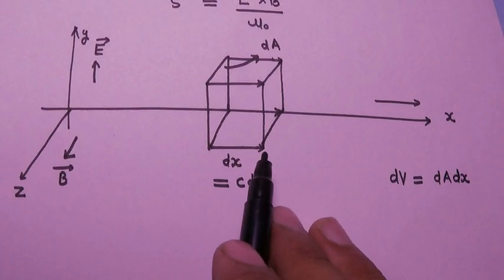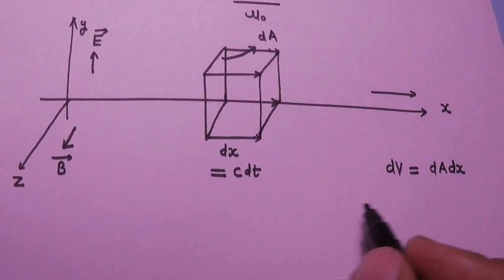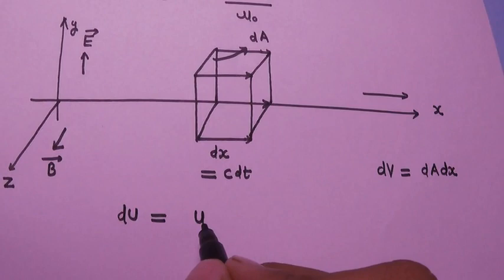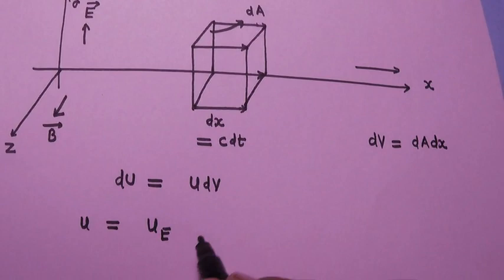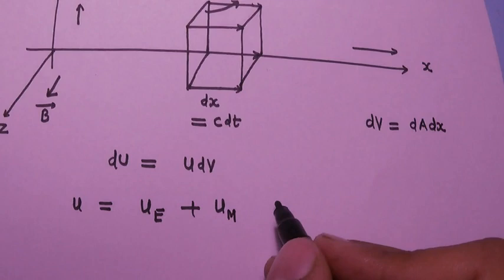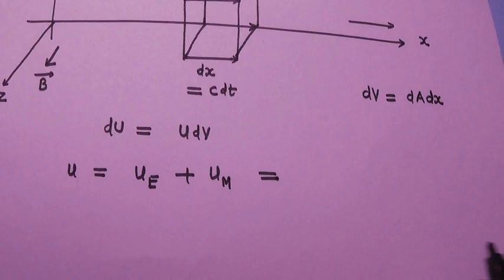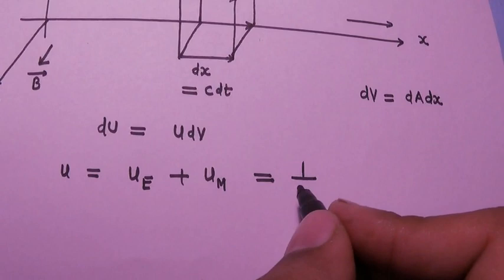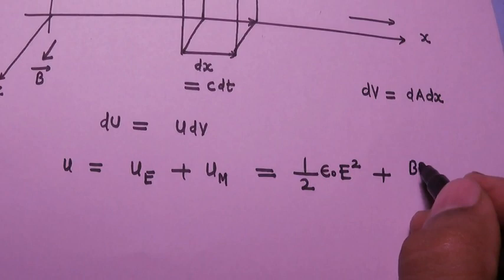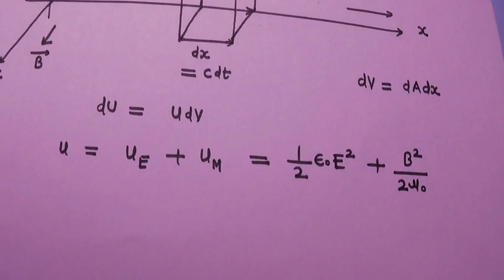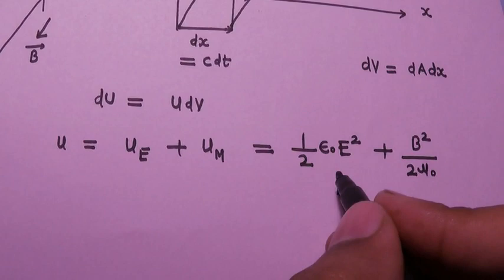The volume of this element equals dA·dx. We can calculate the energy contained inside this volume element: du equals u·dv, where u is the total energy density. It equals the energy density of the electric field plus the energy density of the magnetic field, since both are present in an electromagnetic wave. Energy density of the electric field is ½ε₀E², and energy density of the magnetic field is B²/2μ₀.